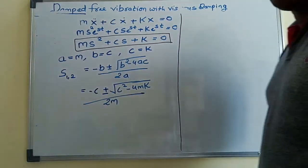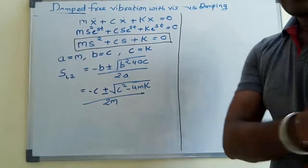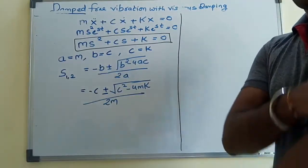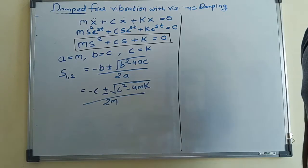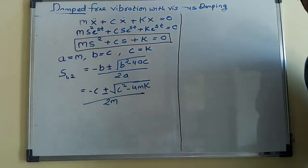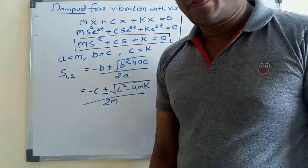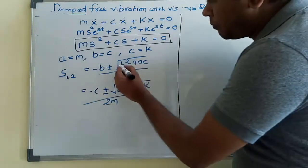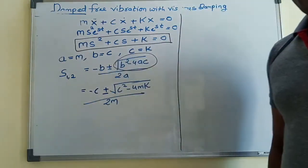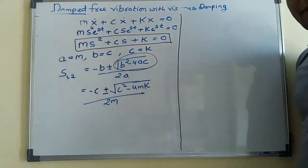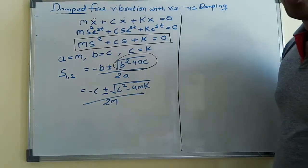This equation is called the characteristic equation. We have three solutions for this kind of characteristic equation, based upon the value of b squared minus 4ac. Based upon that value, we have three solutions.